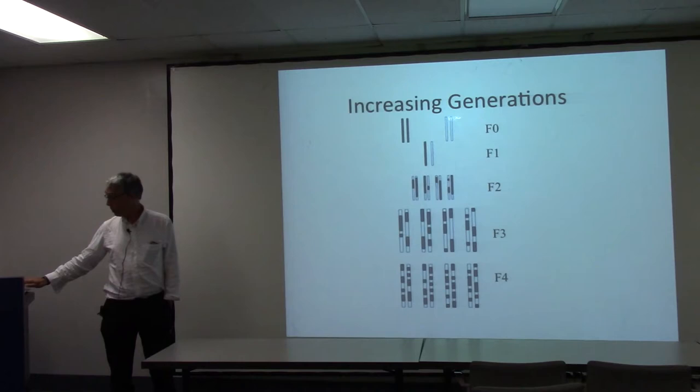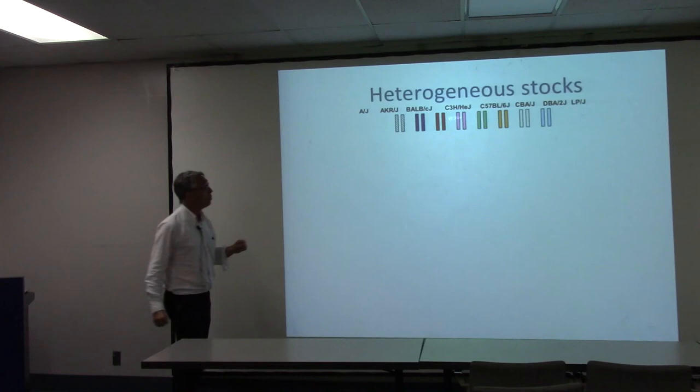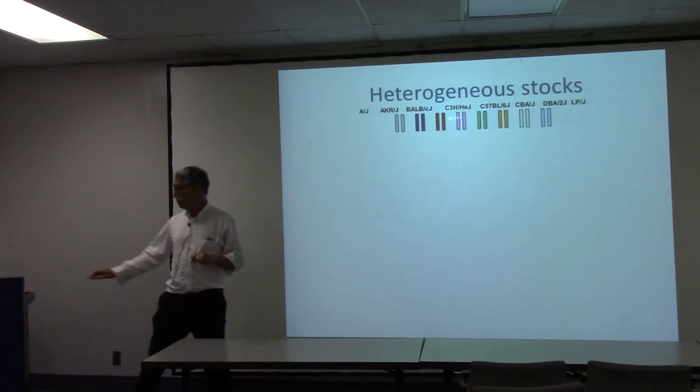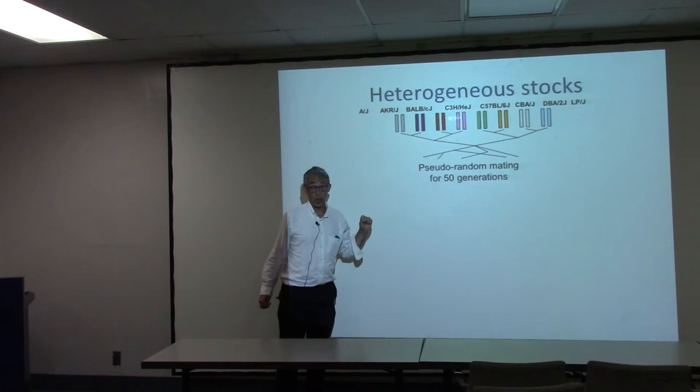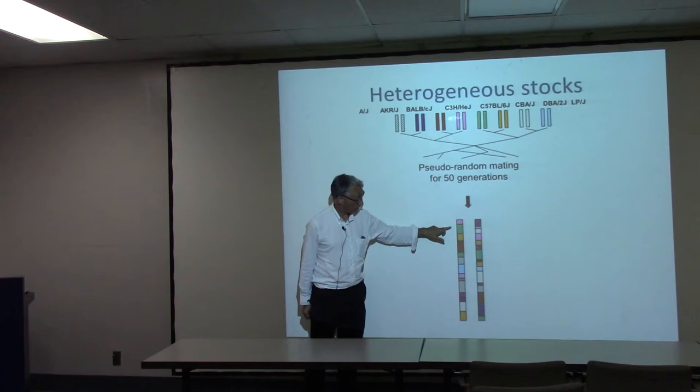There's a slight twist: what we were actually using were heterogeneous stock mice, which are slightly different from that design. Rather than having two strains to start with, they derive from eight inbred strains. The animals we used had been randomly mating for about 50 generations rather than three or four, so we should have increased resolution. The chromosomes appear as a mosaic of each of the founder strains, and the distance between each chromosomal breakpoint gives us the mapping resolution.